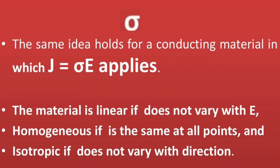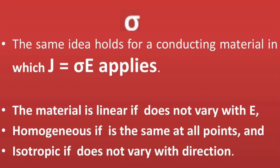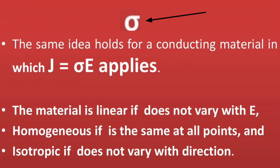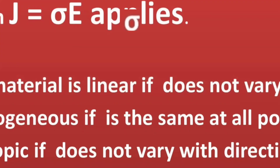The same concepts apply to conducting materials where J = σE (Ohm's law). A conducting material is linear if σ does not vary with E; it is homogeneous if σ is the same at all points; and it is isotropic if σ does not vary with direction.